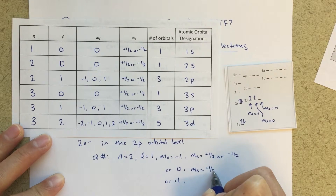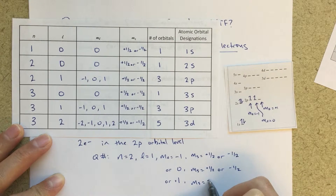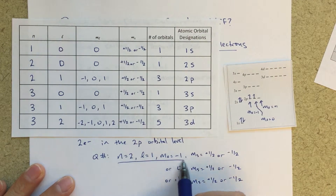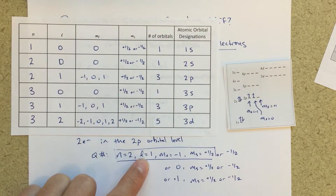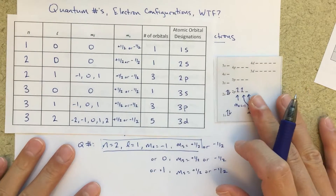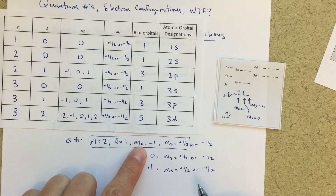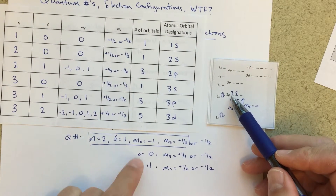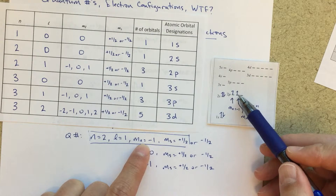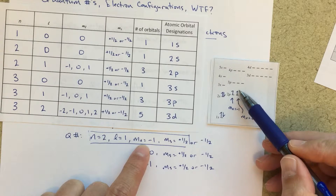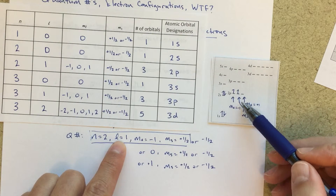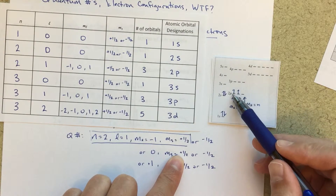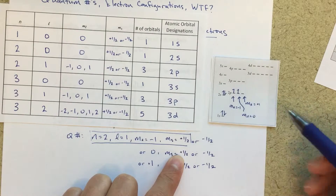For each of the p orbitals, m sub s can equal plus one half or minus one half. So for instance, the address n equals 2, l equals 1, m sub l equals minus 1, m sub s equals plus one half corresponds to one electron. For the next electron: n equals 2, l equals 1, m sub l equals 0, m sub s equals positive one half — because I want the spins to be the same. That's Hund's rule: as I'm filling these, the spins will be the same, and then I'll start pairing them as I continue.